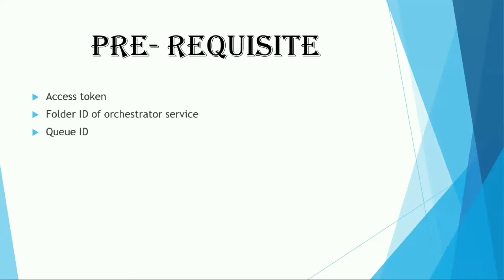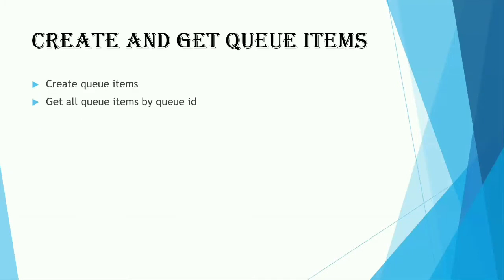We have already seen how we can get the access token and how we can get the folder ID in my previous video, so I suggest you to please go and watch that video. In my previous video, we have also seen how we can get the queue data under the response section of the queue API — you'll find a queue ID there. So let's go ahead and see how we can create the queue items.